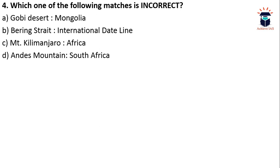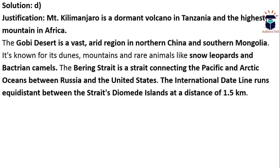The next question asks which match is incorrect: A — Gobi Desert, Mongolia; B — Bering Strait, International Dateline; C — Mount Kilimanjaro, Africa; D — Andes Mountain, South Africa. The answer is D — Andes Mountains are in South America, not South Africa. Mount Kilimanjaro is a dormant volcano in Tanzania, Africa, and is also the highest mountain in Africa. The Gobi Desert lies in both northern China and southern Mongolia — it is not exclusively in Mongolia.